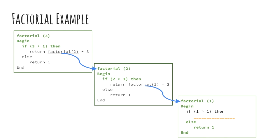In factorial of 1, the function's if condition is not satisfied and the value 1 is returned. Now the context of the calling function, factorial of 2, will be popped out and execution continues with the return value 2. When the control is returned to factorial of 3, the context of factorial of 3 is also popped out from the stack and the multiplication of the return value 2 with 3 takes place, and finally the value 6 is returned by the calling function.